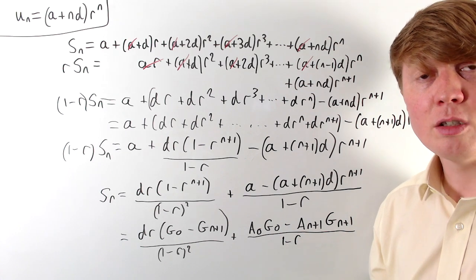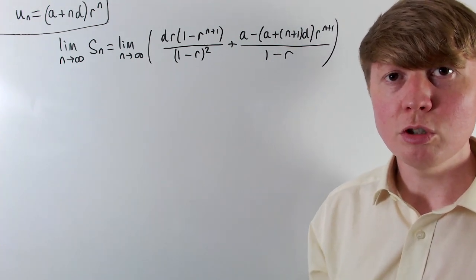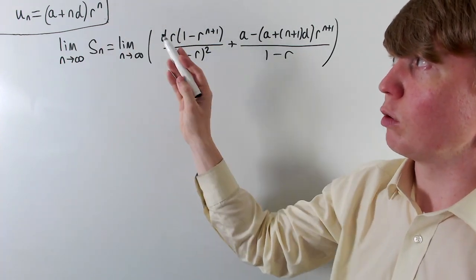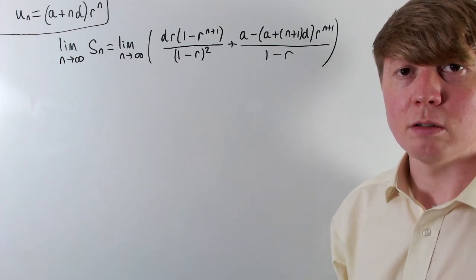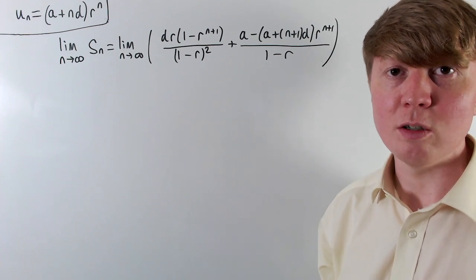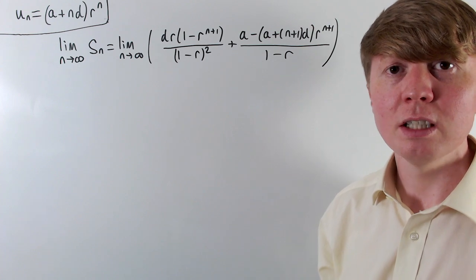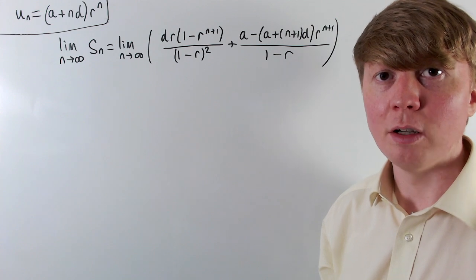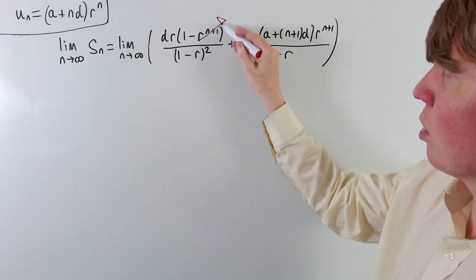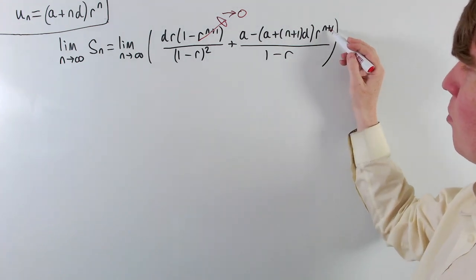Now let's take the limit as n → ∞ to find the infinite sum. Without going into full detail on convergence, the ratio test tells us that when |r| > 1 the series diverges, and when |r| = 1 (e.g., r = 1 it's just an arithmetic sequence, or r = −1) it generally won't converge. When |r| < 1, the r^(n+1) term converges to 0 as n → ∞.